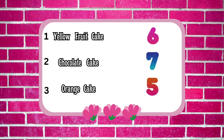How many orders do we have today? Yes, three orders. What are they? Six yellow fruit cakes, seven chocolate cakes, and five orange cakes. Okay friend, let's make these cakes together.